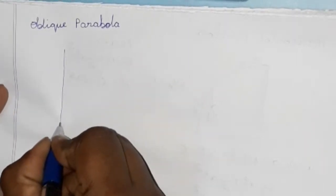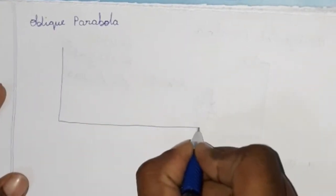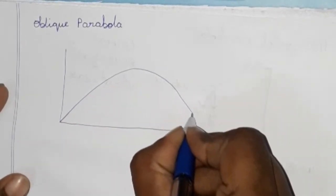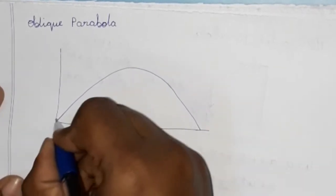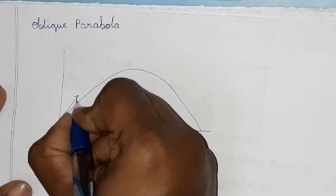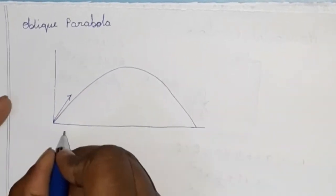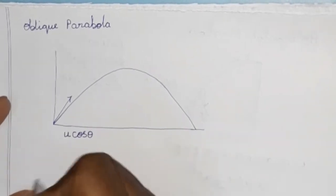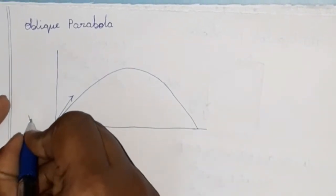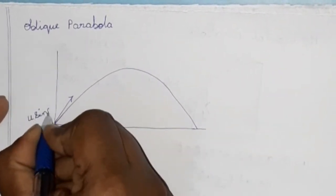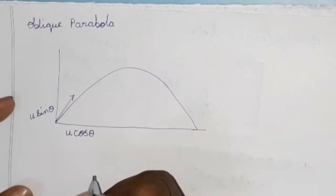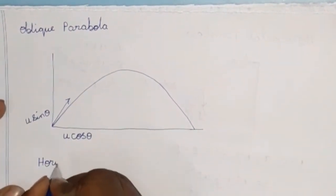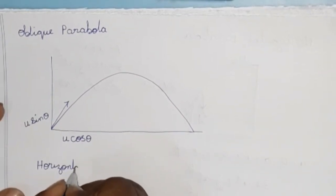Now we call it oblique parabola. The angle is not 0, not 90, but in between 0 to 90. First of all, we have to project the body in the upward direction. The horizontal component is u·cosθ and the vertical component is u·sinθ. So horizontal component is cosine and vertical component is sine.